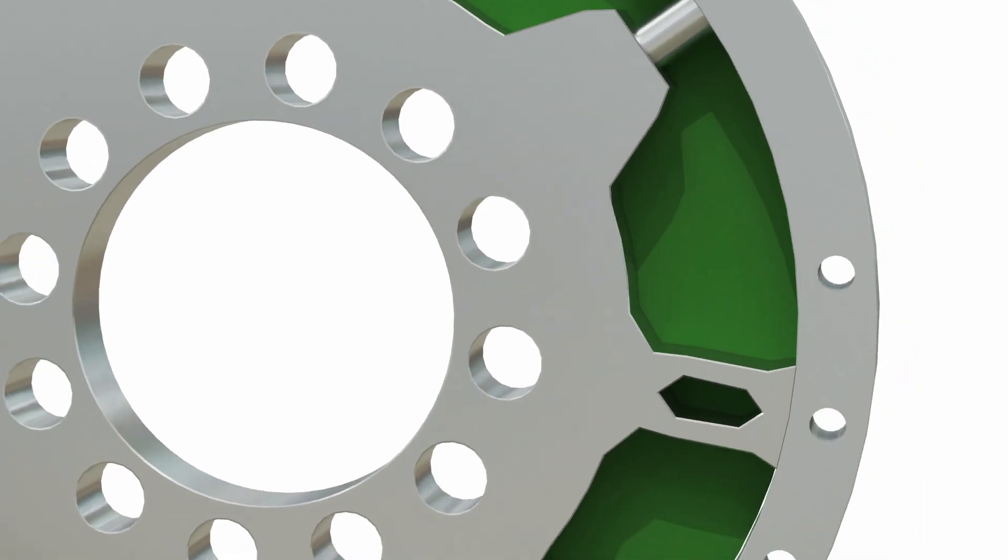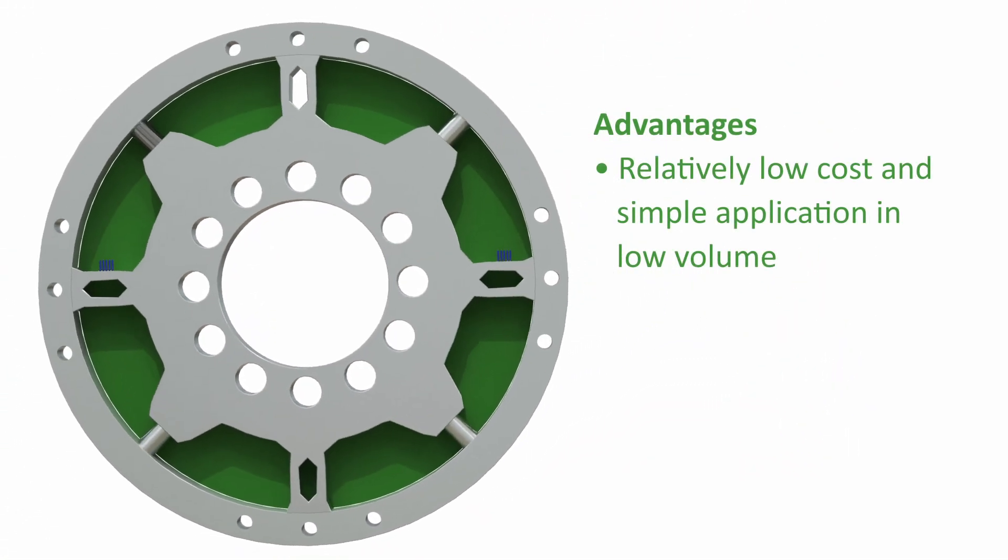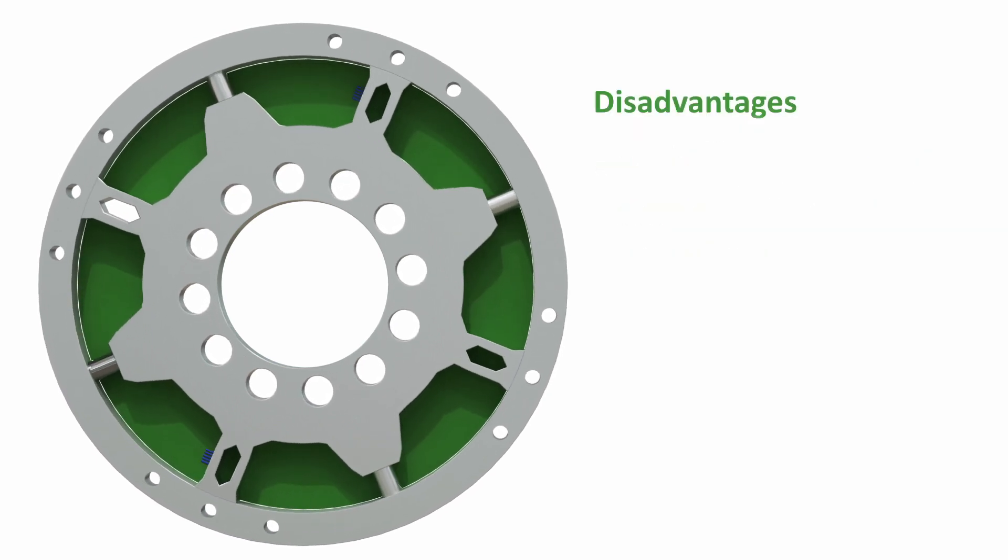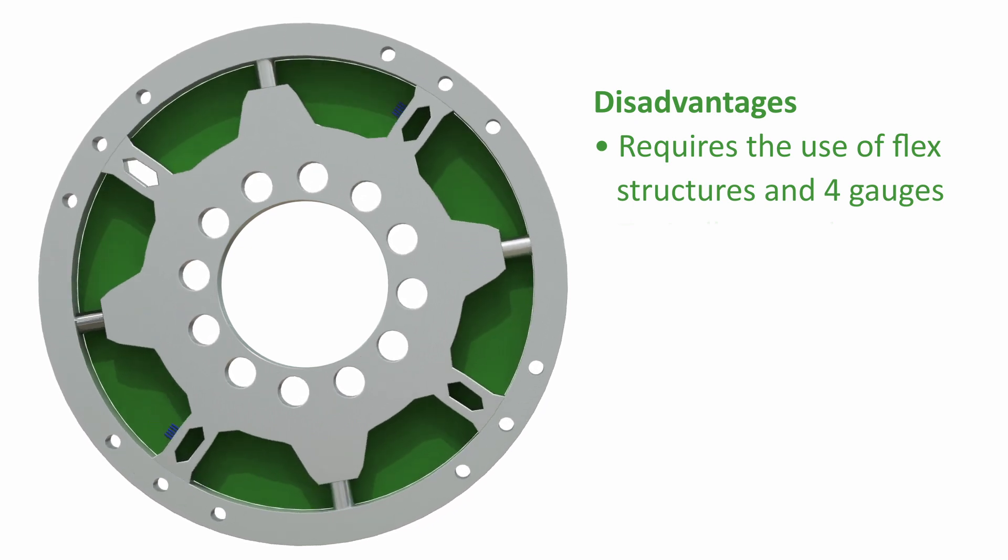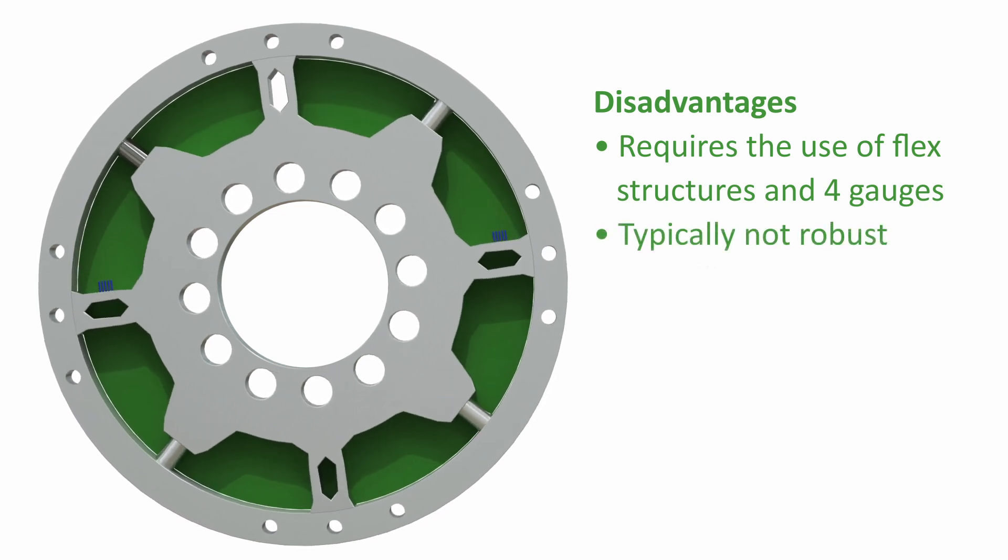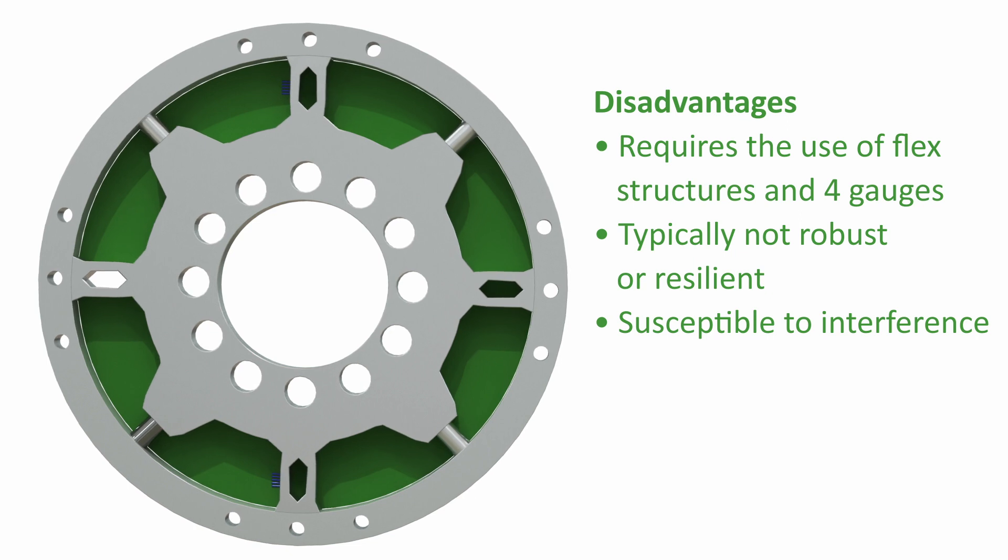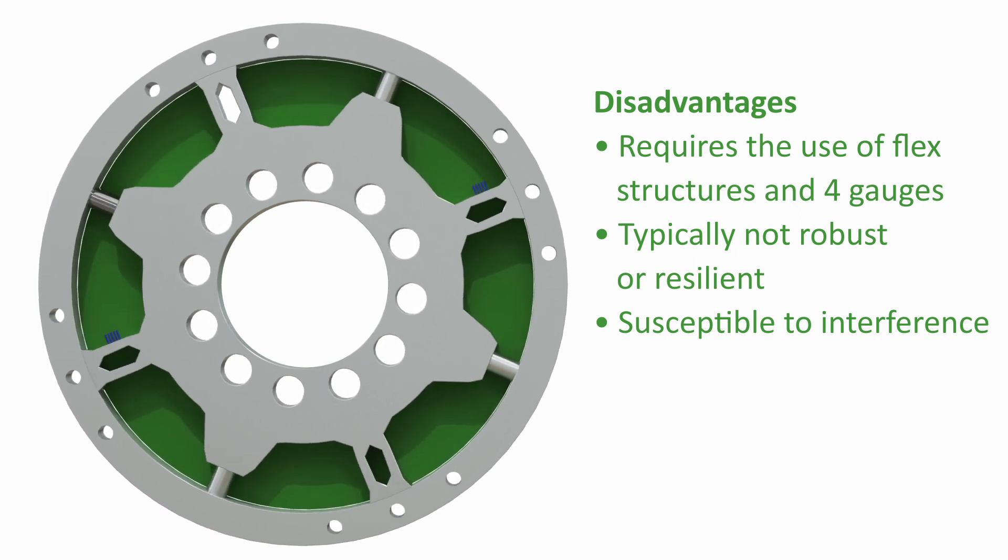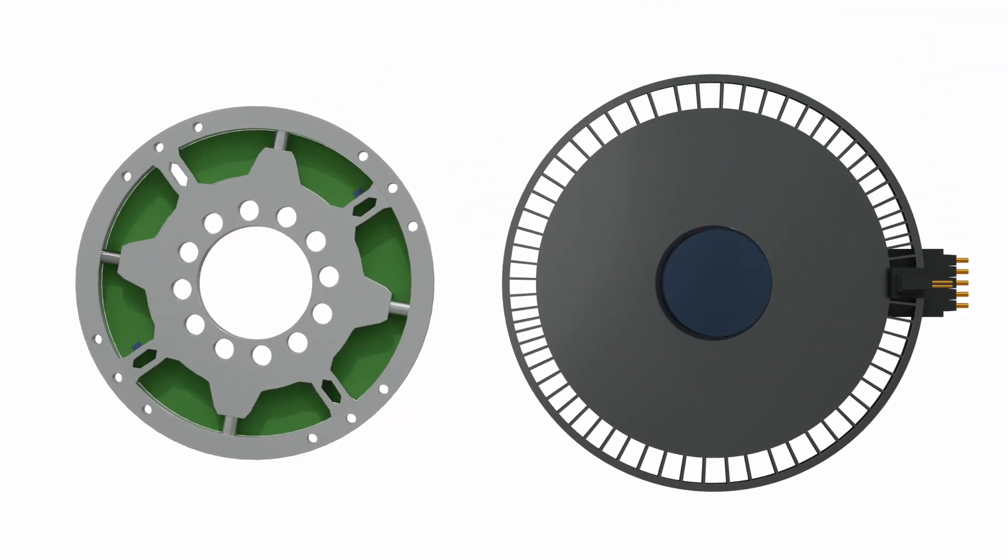The disadvantages of strain gauge sensors in robotic joints include that it requires the use of flex structures and four gauges being arranged in a bridge circuit to provide measurable strain. It's not robust or resilient to harsh environments and is susceptible to interference from background electromagnetic radiation and magnetic fields. Both of these existing technologies require an element of twist or flex in the robot joints, meaning that the robotic arm will flex in operation, limiting performance and repeatability.